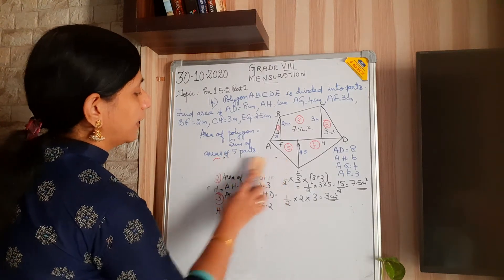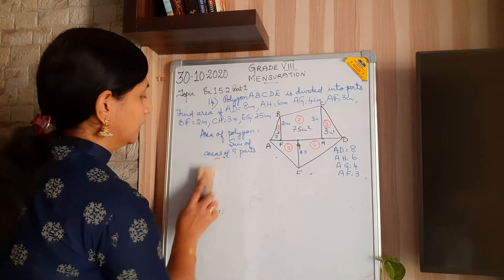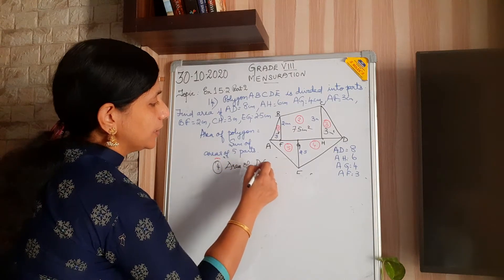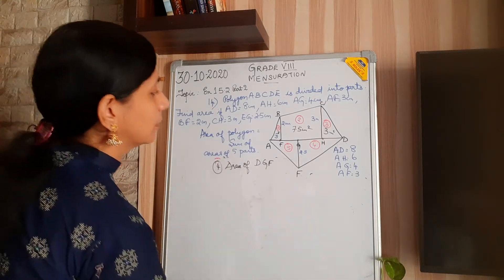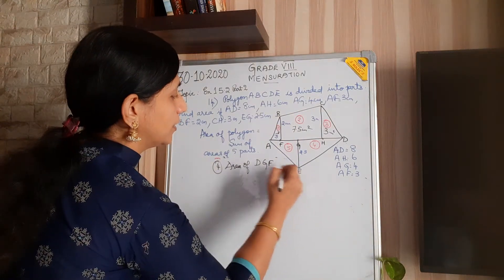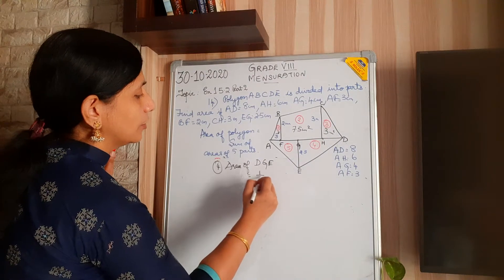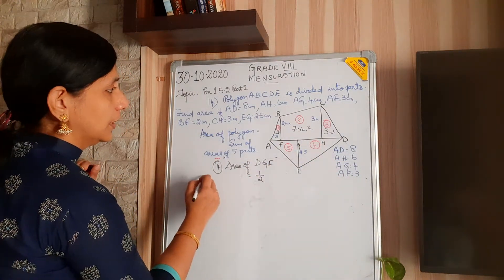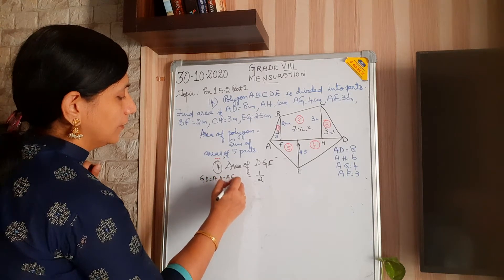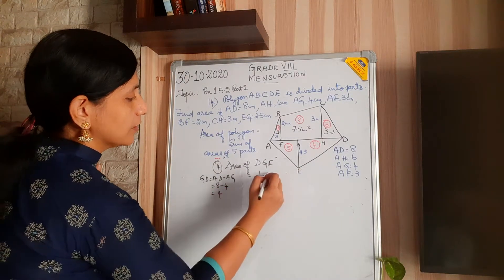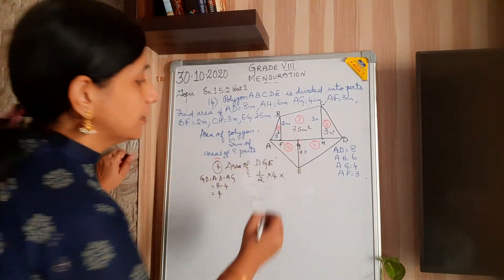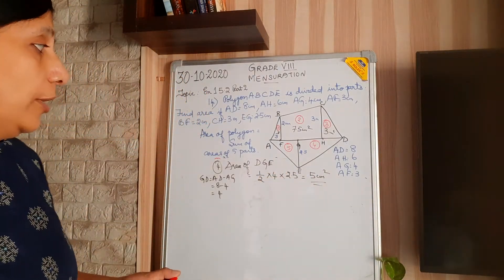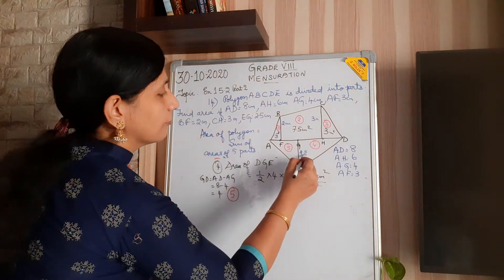The fourth part is also a triangle. Area of triangle DGE: the base GD equals AD minus AG = 8 minus 4 = 4. The height is 2.5. So half × 4 × 2.5 = 5 centimetres square.